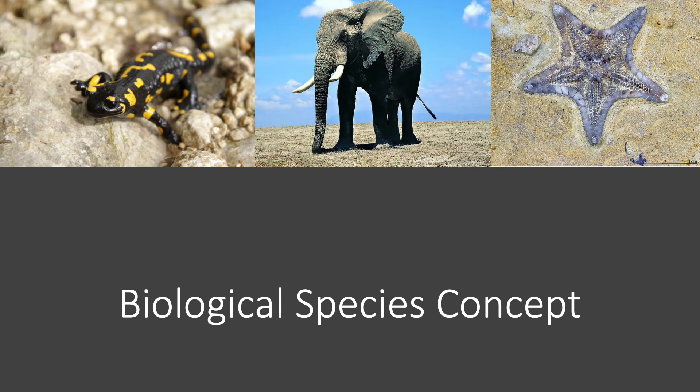Moving on to the biological species concept. This idea states that two members of the population of a species can interbreed and produce a fertile offspring. I mentioned earlier that when successful speciation occurs you end up with two distinct species, but how can we know for sure? How do we know that these are two separate species and not just two different populations of the same species?